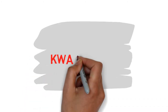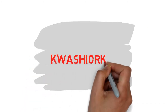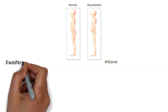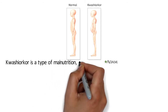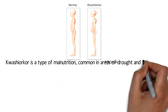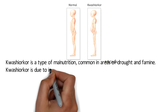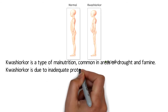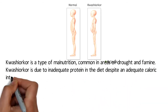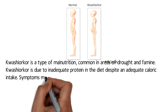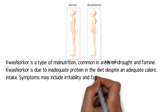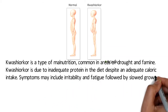Today's topic: kwashiorkor. Kwashiorkor is a type of malnutrition common in areas of drought and famine. Kwashiorkor is due to inadequate protein in the diet despite adequate caloric intake.